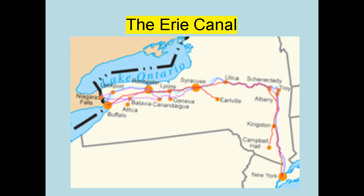Shipping goods west from Albany was time-consuming and costly. There was no railroad yet. To ship goods by stagecoach from New York City to Buffalo would take two weeks — a long downtime — and a stagecoach couldn't carry much product. So in 1817, Congress authorized the expenditure of $7 million for the canal's construction.